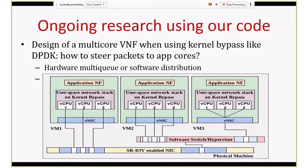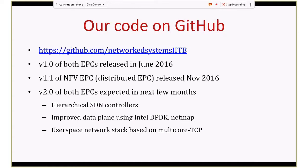Even if the details are not all clear, the key point is that when building software using NFV or SDN, there are several design options to consider. Using our code to build different prototypes across different designs and test them will let you draw good conclusions on which type of design is likely to work well in the future. We have released two versions of the EPC on GitHub—one based on NFV and one based on SDN—and are also working on several enhancements.